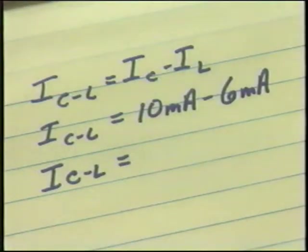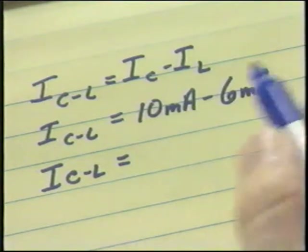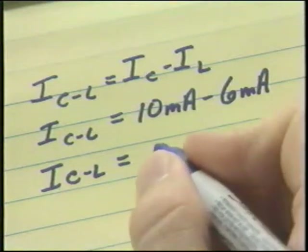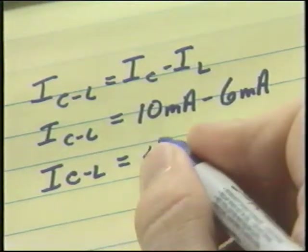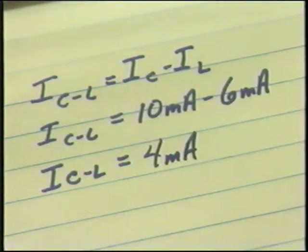In this example parallel RLC circuit, the inductive current is 6 milliamps and the capacitive current is 10 milliamps. The total reactive current will be I sub C minus I sub L, or 10 milliamps minus 6 milliamps, which yields a total reactive current of 4 milliamps.